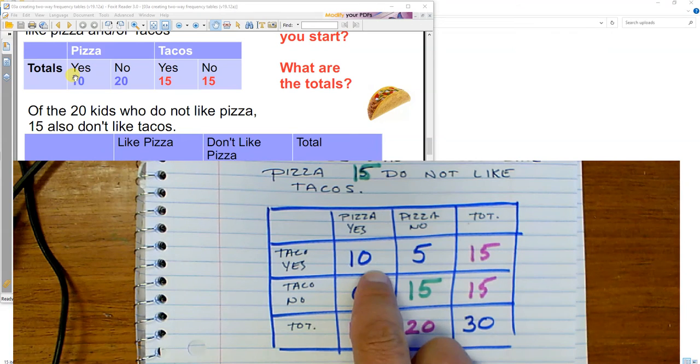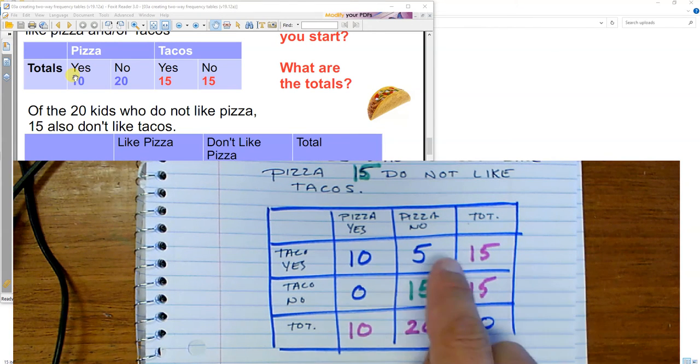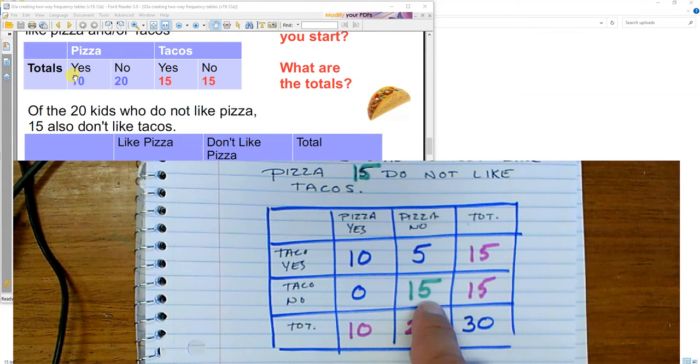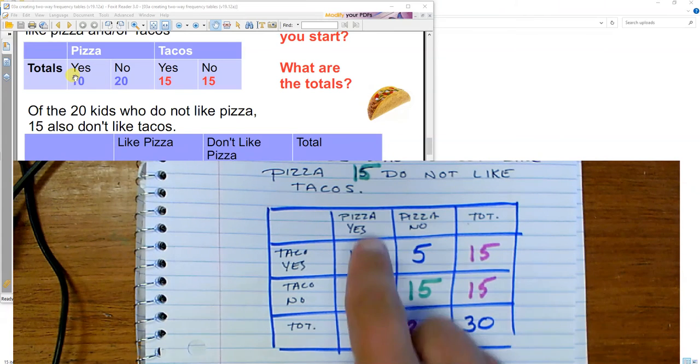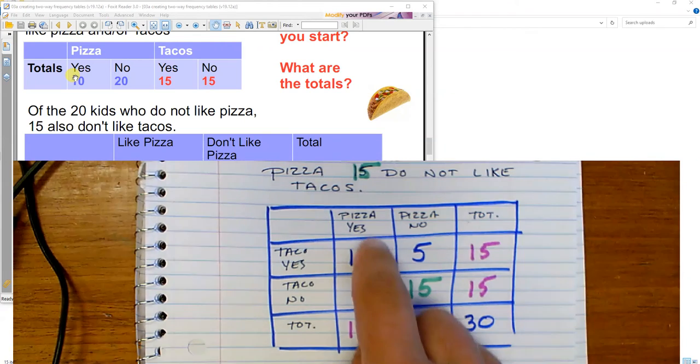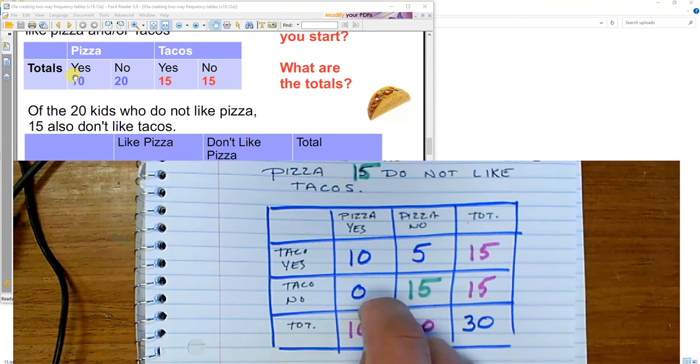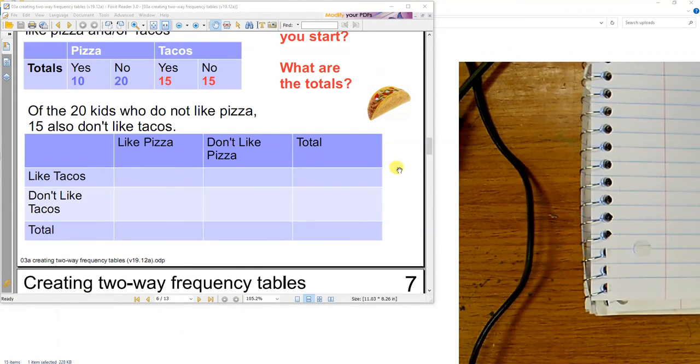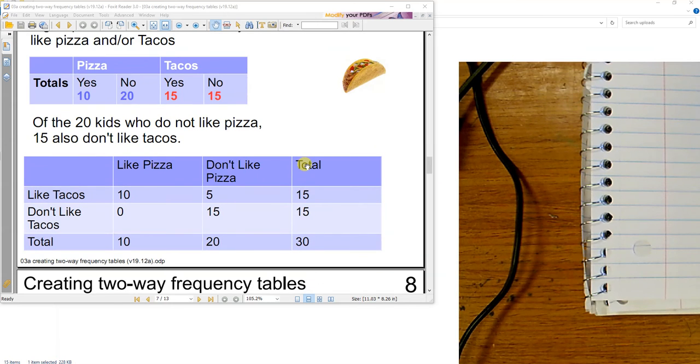So what does this mean? I've got 10 kids that like pizza and tacos. I've got 15 kids that don't like tacos or pizza. I have no kids that like pizza but don't like tacos. So pizza kids are pretty easy. If you like pizza, you like tacos. And that's how it works. And there's our answer.